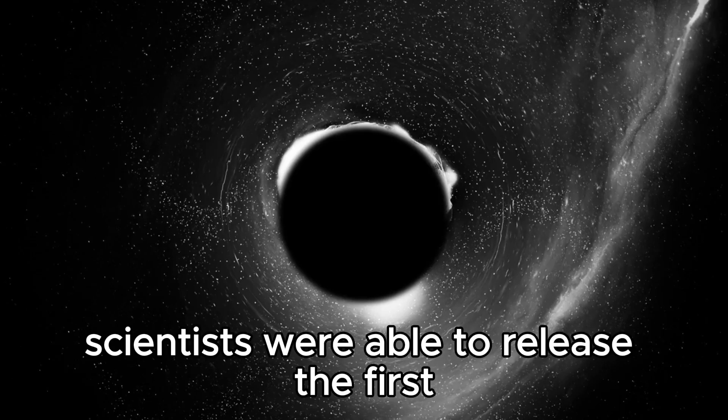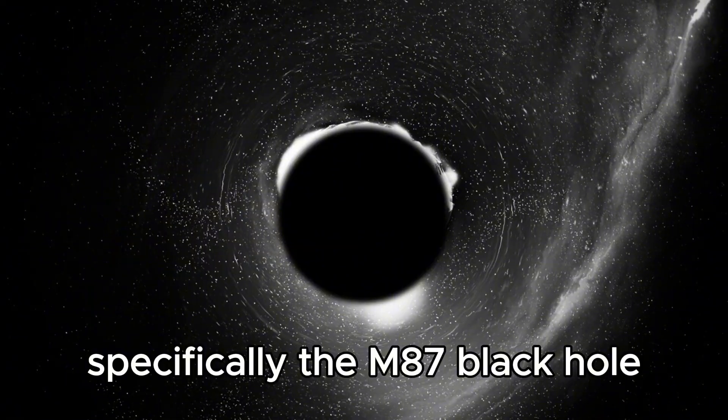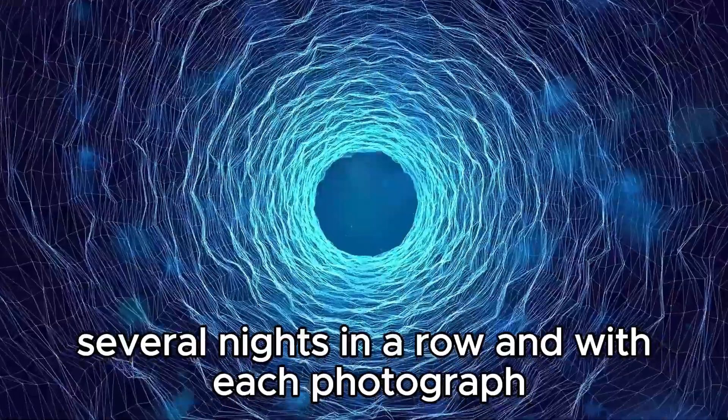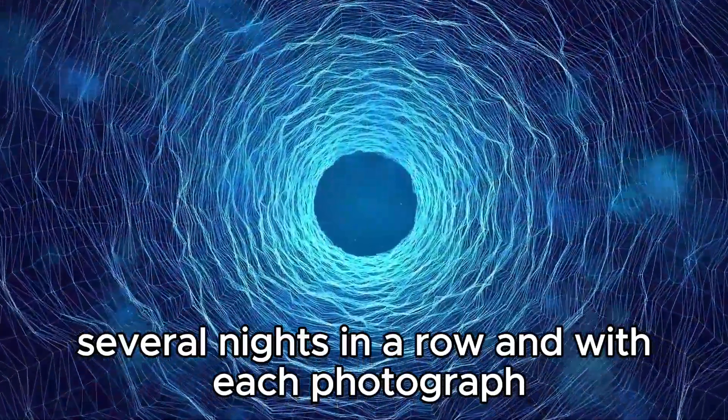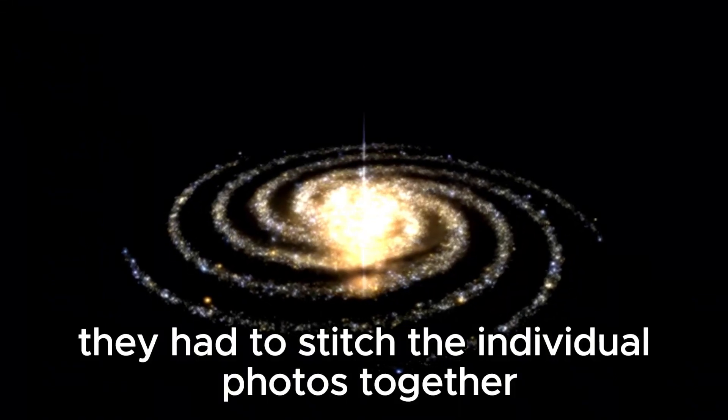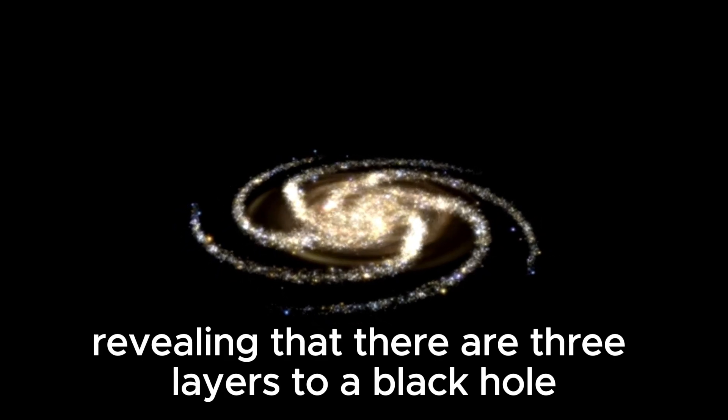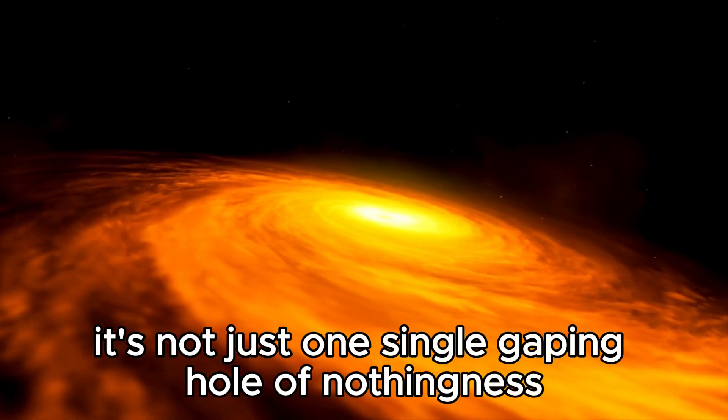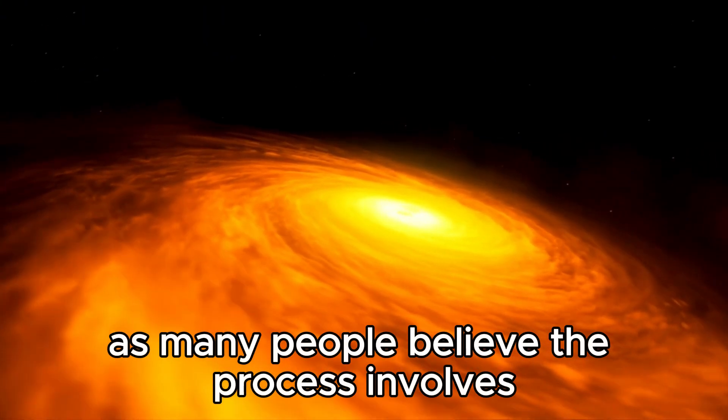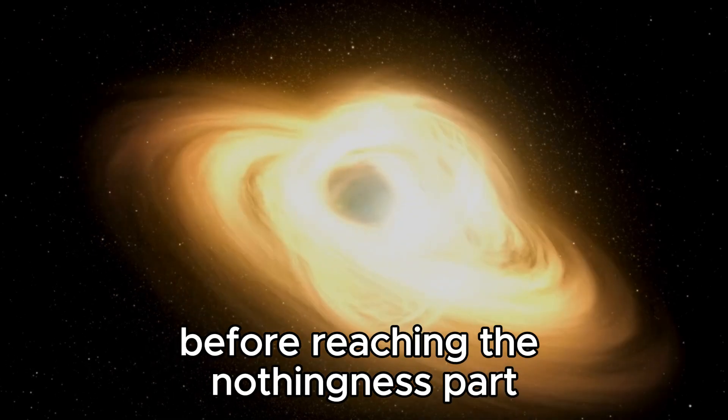In 2021, scientists were able to release the first clear photograph of a black hole, specifically the M87 black hole. This black hole was photographed several nights in a row, and with each photograph, the researchers gathered more evidence. They had to stitch the individual photos together to create a comprehensive image, revealing that there are three layers to a black hole. It's not just one single gaping hole of nothingness, as many people believe. The process involves making it through the first two layers before reaching the nothingness part.